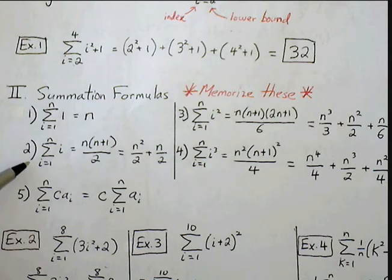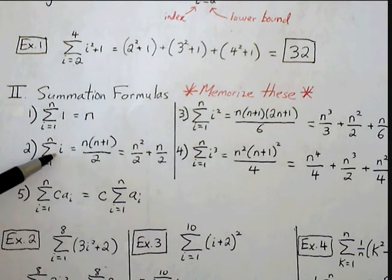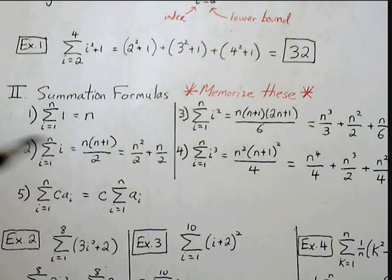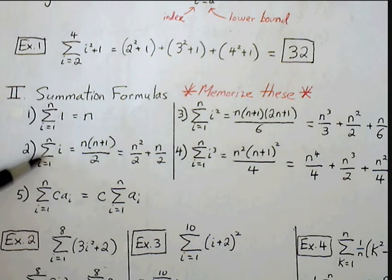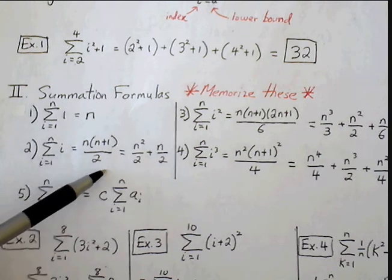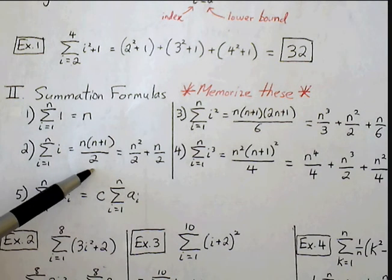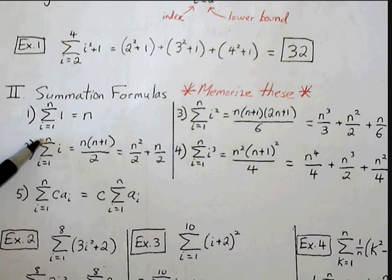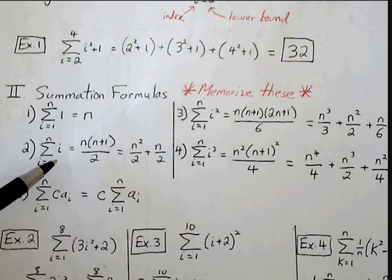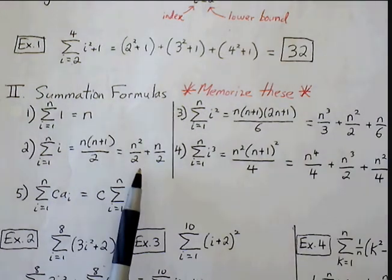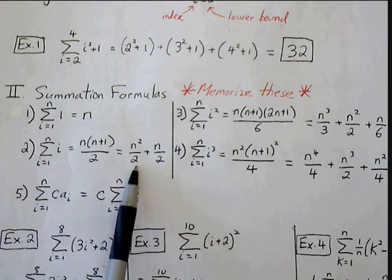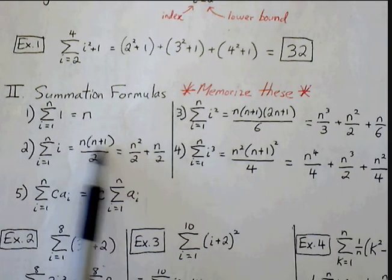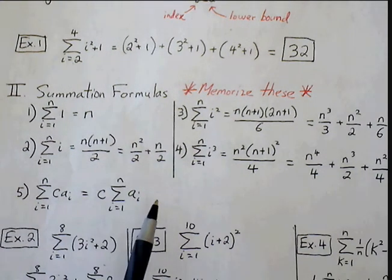For the second rule, the summation from 1 to n for the quantity i, rather than adding all these up one by one, we can use the shortcut rule: n times n plus 1 divided by 2. We can also memorize this as n squared over 2 plus n over 2. This is just foiling this out and writing it as separate fractions.